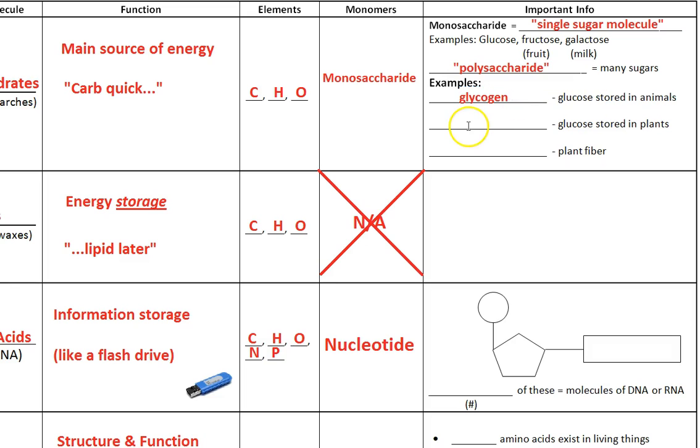Some examples of polysaccharides, we've got glycogen, that's glucose stored in animals. We've got starch, that's glucose stored in plants. And finally, we've got cellulose, which is plant fiber. This is the fiber that's in your diet. It's also called nature's broom because it just kind of sweeps and cleans you up. It's why old people also like to eat a lot of cellulose, because it helps them poop better.